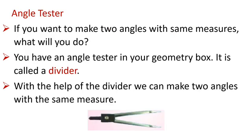Now, let us proceed further. Angle tester. What is an angle tester? If you want to make two angles with the same measure, what will you do? You have an angle tester in your geometry box. It is called a divider. It is V-shaped instrument and has pointers on both ends of the V.